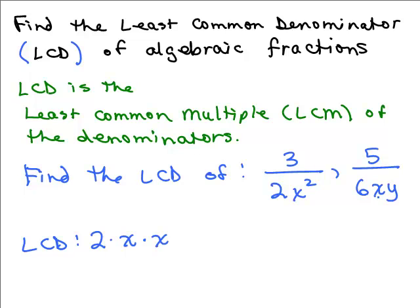Now I also need a 6XY. The 6 breaks down into 2 times 3, so I also need a 3. I already have the 2, but I need 2 times 3 to make sure 6 is part of it. I need an X — I've got the X — and I need a Y. So my least common denominator is 2 times 3 is 6, giving 6X squared Y.